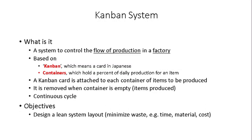In general, we attach one Kanban card to its container for items that are going to be produced. Whenever the assembly line finishes with that container, the card is removed — this is a continuous cycle throughout the day. The objective of using such a system is to design a lean layout in order to minimize waste, whether in time, material, or cost. Our goal is to optimize the production flow in a factory by using a lean methodology.